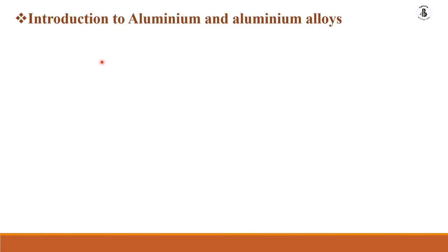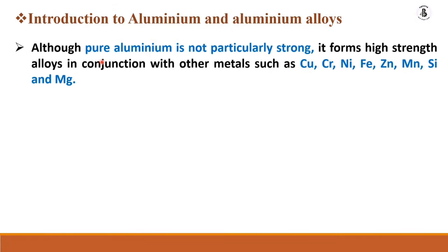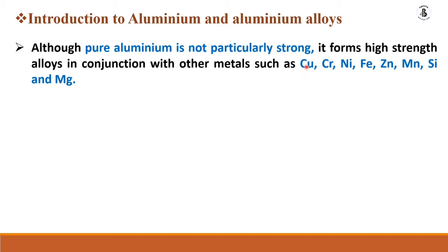Pure aluminium does not have particularly useful properties on its own for most applications. To make aluminium materials strong, they are combined with other elements such as copper, chromium, nickel, iron, zinc, manganese, silicon, magnesium, and many more alloying elements.